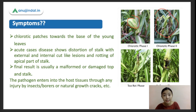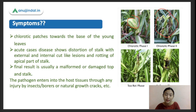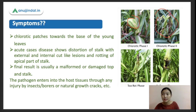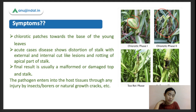The base of affected leaves will often be narrowed compared to normal healthy leaves. The pathogen - this fungus - enters the plant through injuries done by insects such as borers, or through natural growth cracks, or sometimes during intercultural operations where the plants might be split. Through those entry points, the fungus can enter the plant.